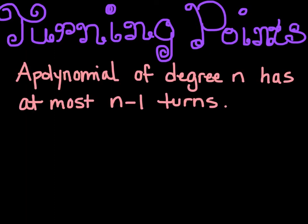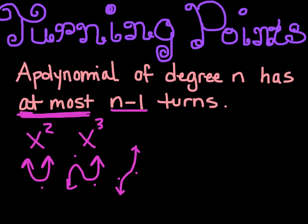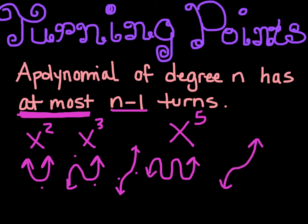The next thing we're going to talk about is turning points. The general rule is a polynomial of degree n has at most n minus 1 turns. Quadratics turn one time. Cubics can turn twice, but they don't have to — they might not turn at all. You could have x to the 5th with 1, 2, 3, 4 turns, or it could just curve through without that many. So it will have at most n minus 1 turns.